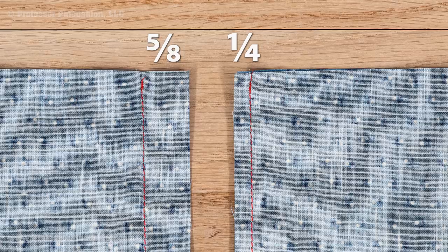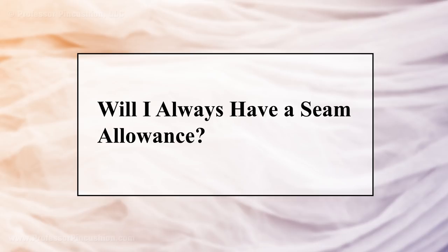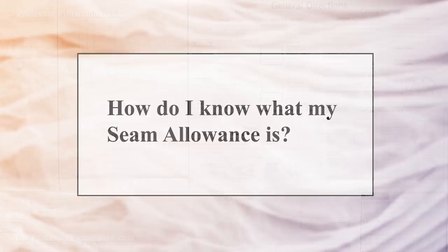Hopefully you're convinced that a seam allowance is necessary, but will your project always have seam allowances? Yes. Regardless if you're making teddy bears, clothes, or quilting, there will always be a seam allowance. The seam allowance size will vary from project to project. For example, quilting will typically have a seam allowance of a quarter inch, while garments traditionally have a seam allowance of 5/8 of an inch. How do you find out what your seam allowance is for a particular project?